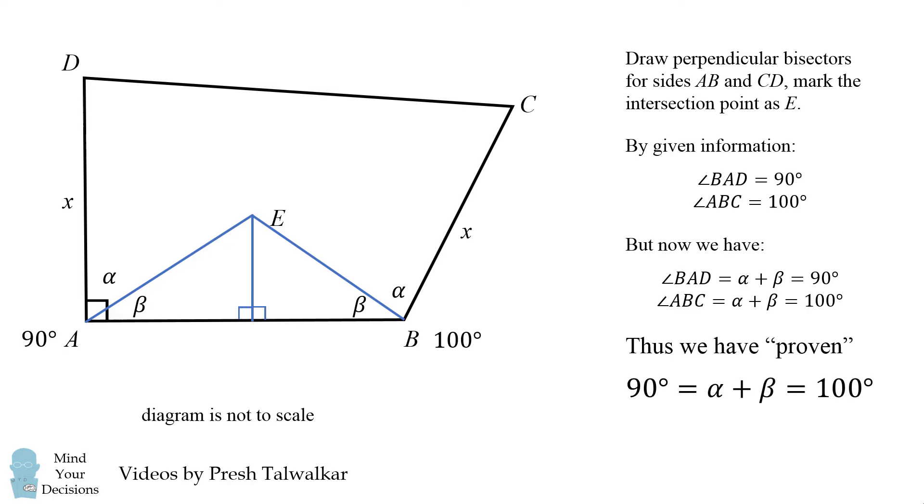Therefore, we've proven that 90 degrees is equal to alpha plus beta is equal to 100 degrees, and so we've shown that 90 is equal to 100. But this is an absurd result. So the question to you is where is the mistake in this seemingly convincing proof? Can you figure it out?